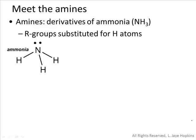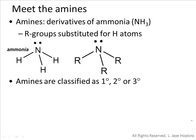Amines are derivatives of ammonia because ammonia's hydrogen atoms are replaced with one or more carbon-containing R groups. An amine molecule can contain one, two, or three R groups, and this is how we classify amines as primary, secondary, or tertiary amines. For example, replacing one hydrogen with a methyl group gives a primary amine; replacing two hydrogens gives a secondary amine. The R groups can be the same or different.